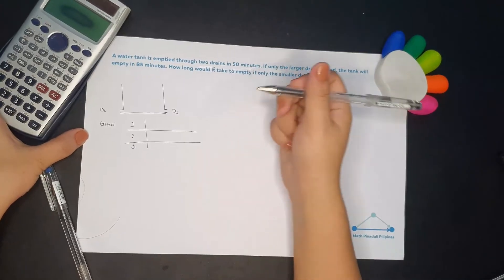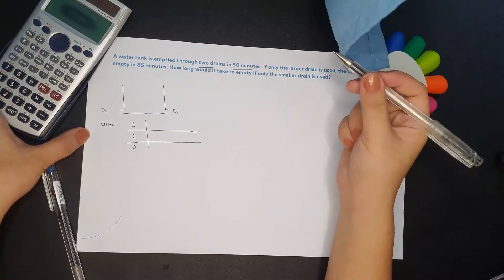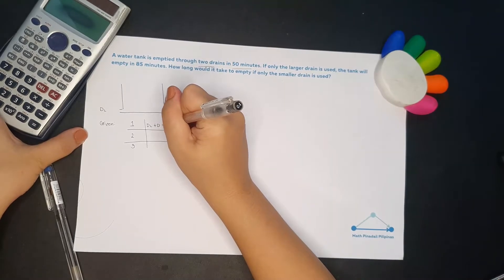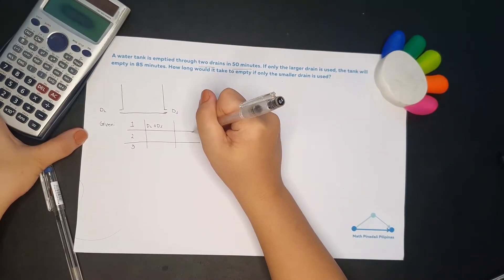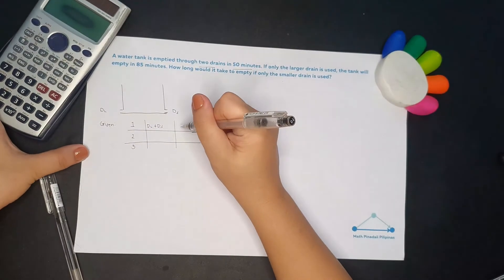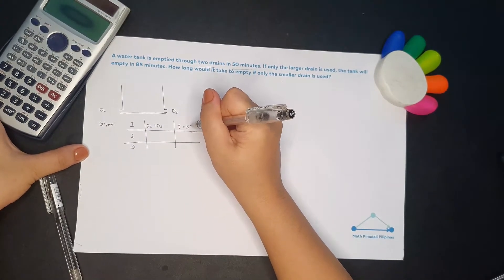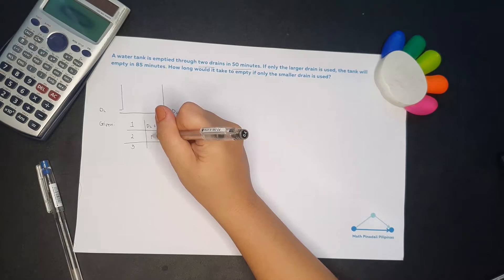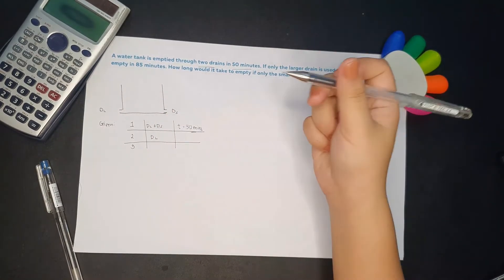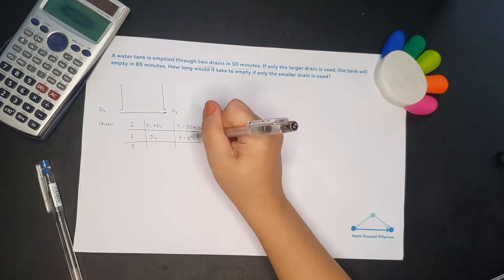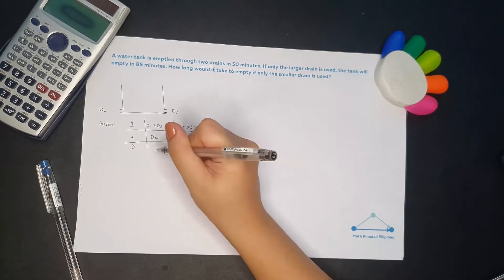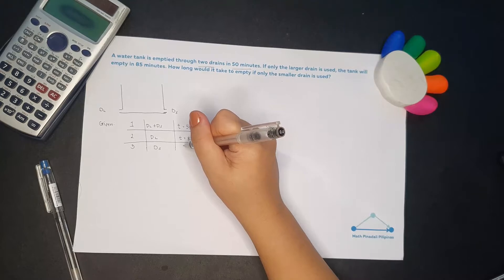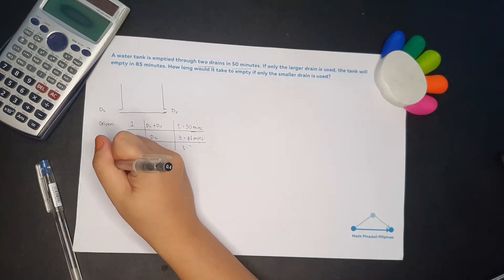For the scenario 1, ginamit yung both drains. So drain larger plus drain smaller. And then the time it takes to drain the water is 50 minutes. For the scenario 2, ang ginamit lang ay the larger drain. So it took 85 minutes. And then for the third one, ang ginamit tayo, the smaller drain, ito yung tinatanong.